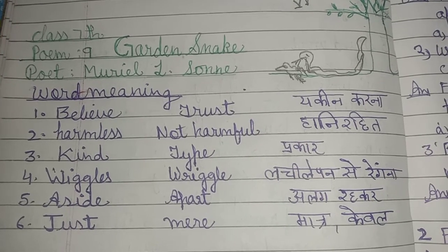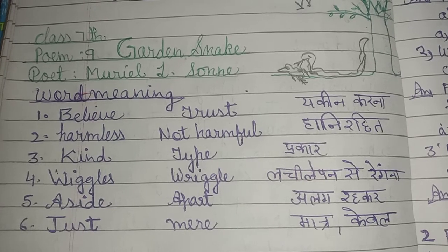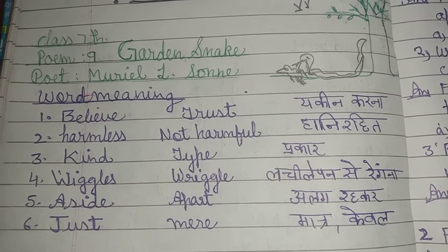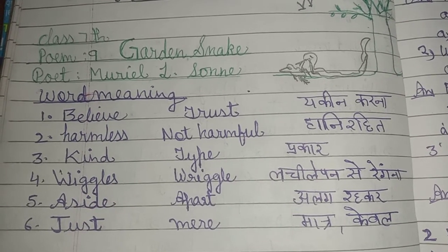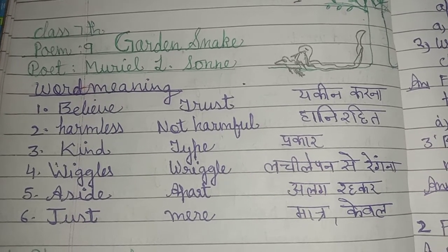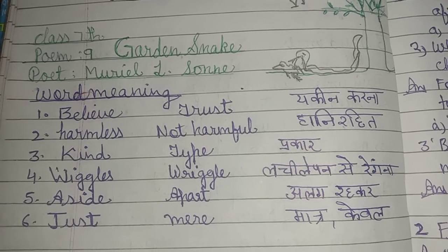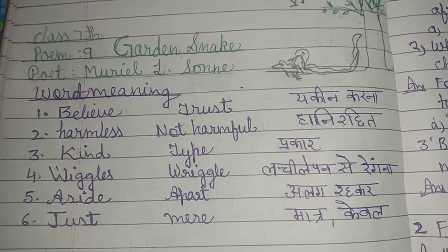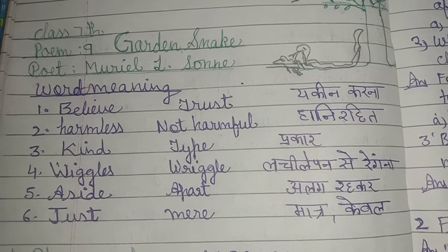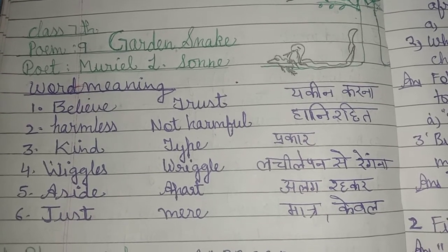The next word is 'aside' — apart, different. When the child is looking at snakes for the first time, they run away. But the mother tells the child that garden snakes are not dangerous. The snakes are moving through the grass aside — different. To look at the snakes.